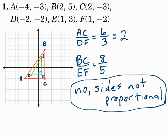Remember: when you dilate a figure, if it gets bigger it's an enlargement, and if it gets smaller it's a reduction. The scale factor is a new side length divided by an old side length. If the scale factor is bigger than 1, it's an enlargement; if it's between 0 and 1, it's a reduction. To verify similarity, graph the figures and find the side lengths — sometimes you need the distance formula for diagonals. Make sure the side lengths are proportional and the angle measures are congruent. If they are, then it is similar; if not, then it's not.